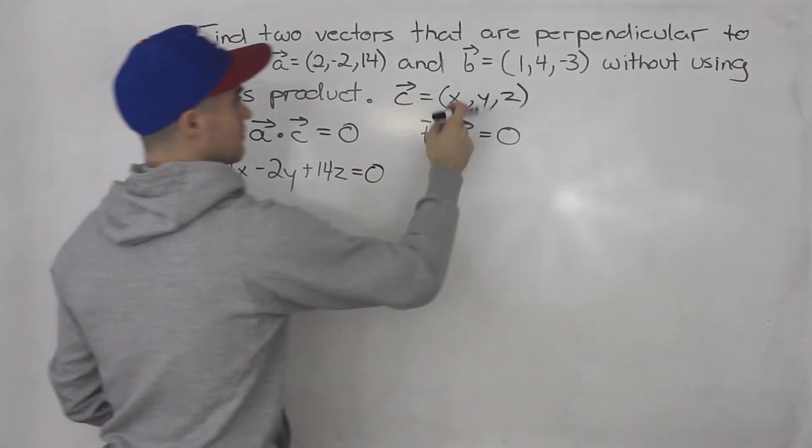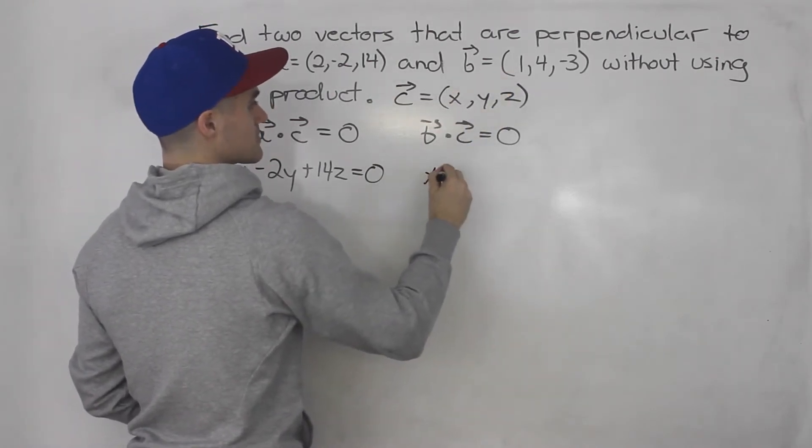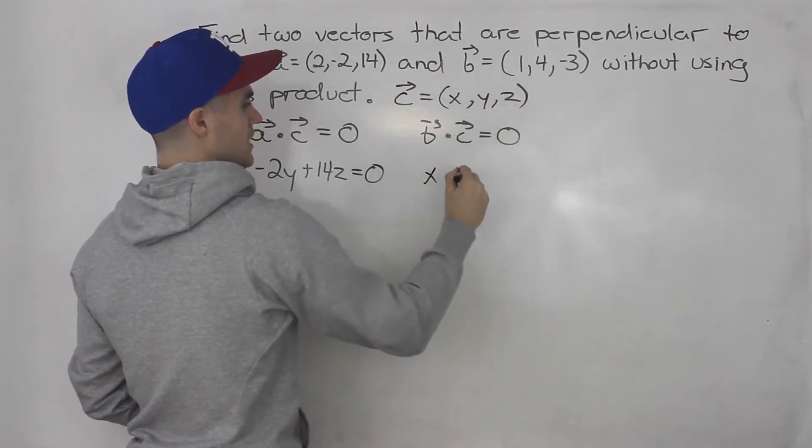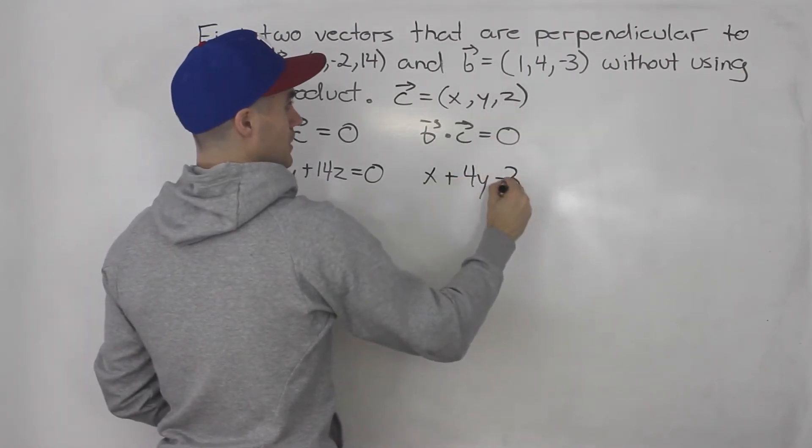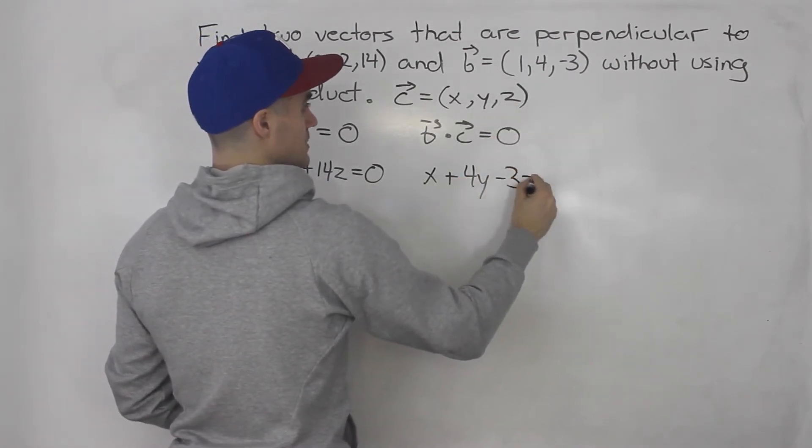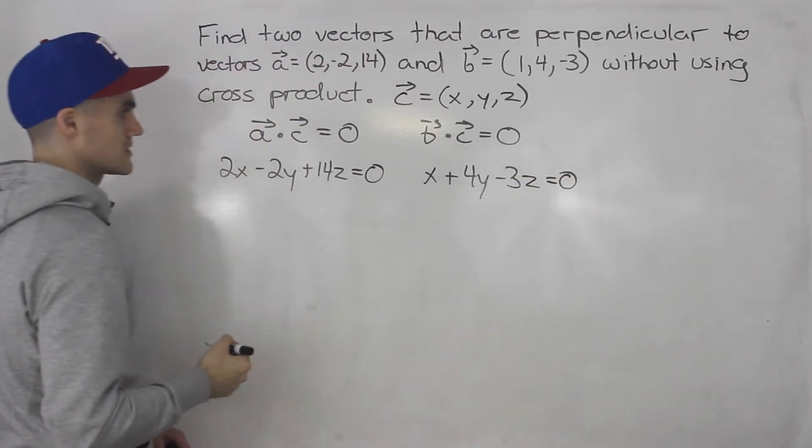What about here? B dot C. Well, 1 times X is just X plus 4 times Y times negative 3 or minus 3 times Z. And that's going to equal zero as well.